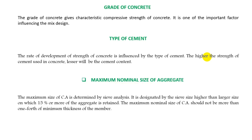Then, maximum nominal size of aggregate. The maximum size of coarse aggregate is determined by sieve analysis. It is defined by the sieve size higher than the largest size on which 50% or more of the aggregate is retained. The maximum nominal size of coarse aggregate should not be more than one-fourth of the minimum thickness of the member.